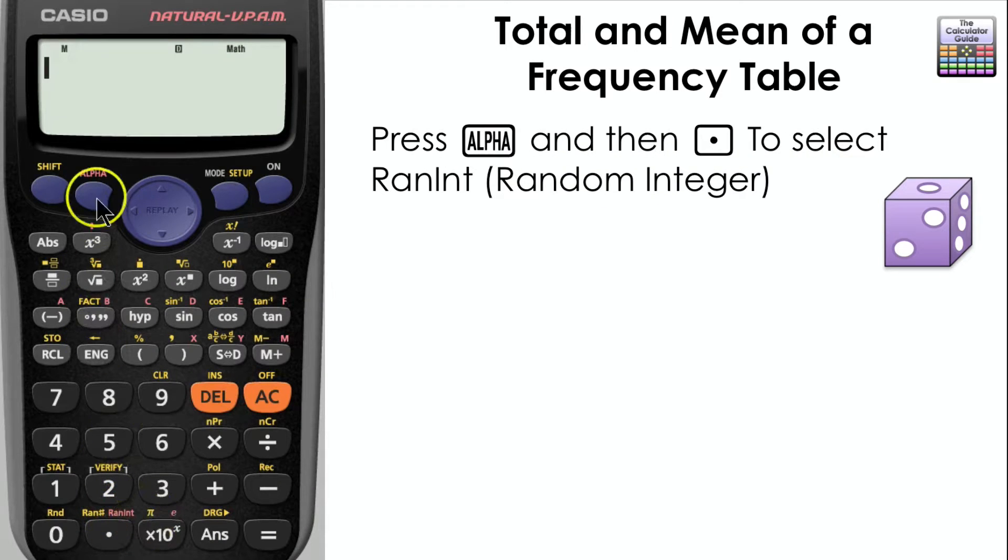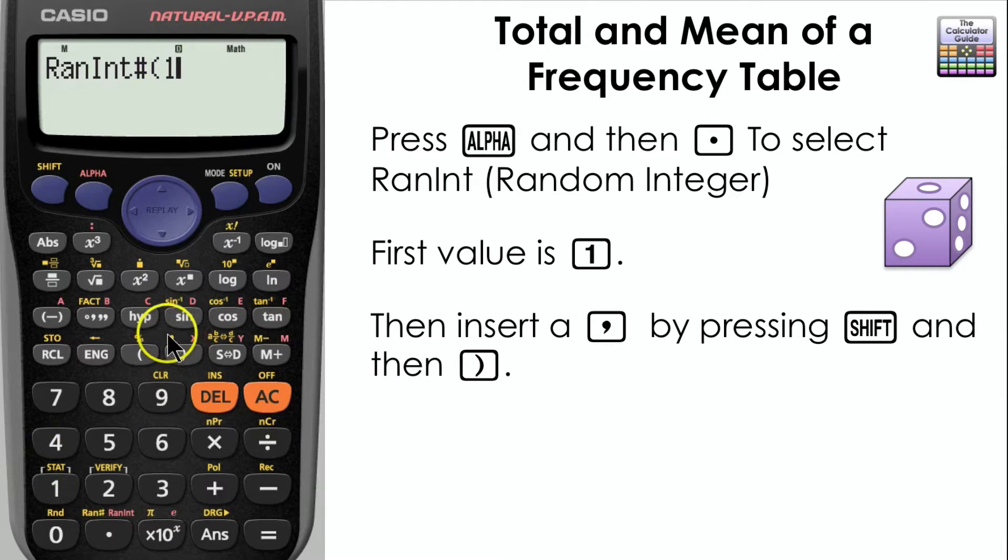Press alpha and then a point or a period to select random integer. The first value is 1, then insert a comma by pressing shift and then right bracket. The last value is 6.